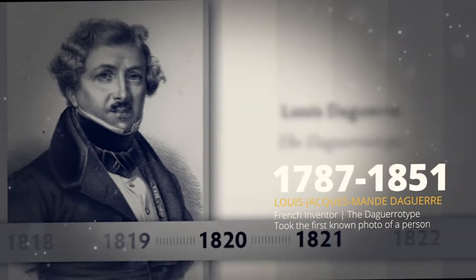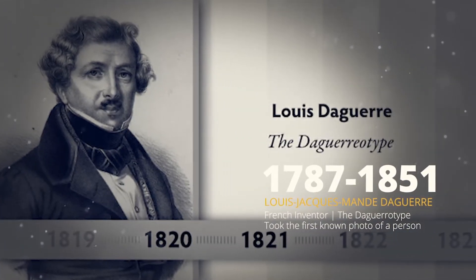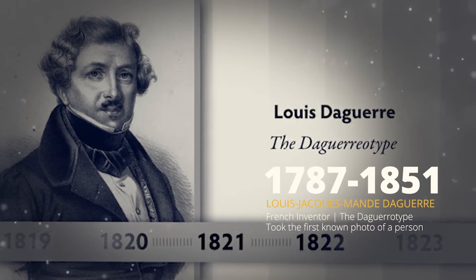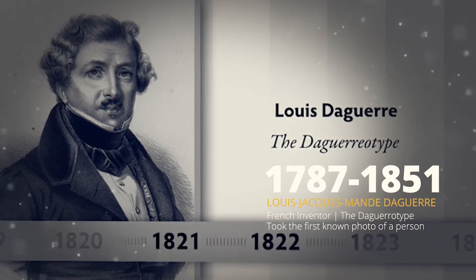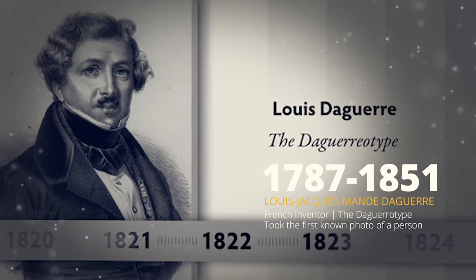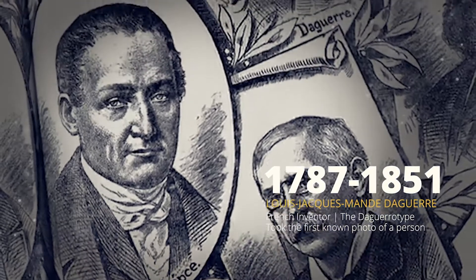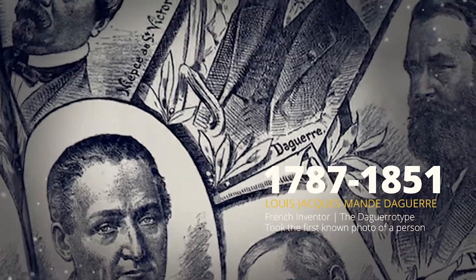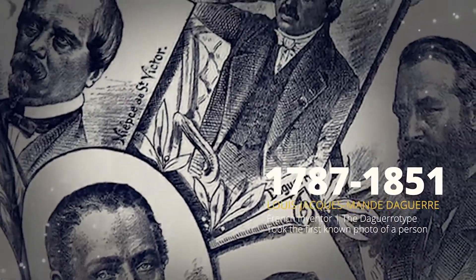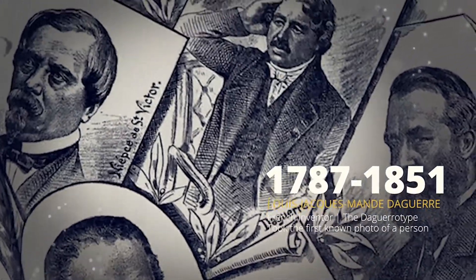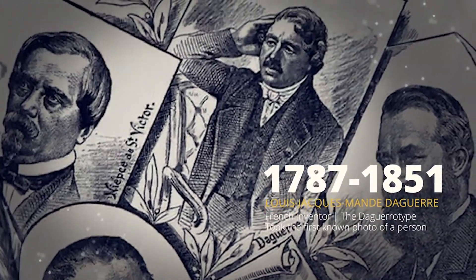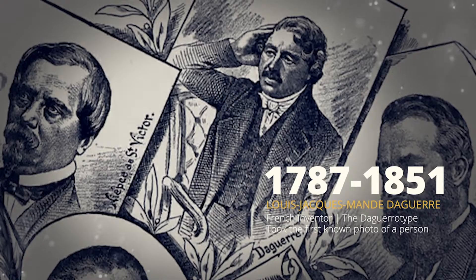Around that same time, another Frenchman named Louis-Jacques Mandé Daguerre was also experimenting with ways to create a fixed image, and in 1829, Daguerre and Niepce formed a partnership, but Niepce passed away in 1833.